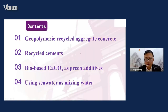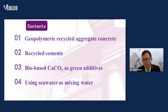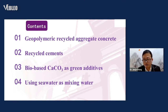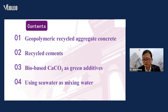My report consists of four parts. As we know, concrete consists of aggregates, cement, and water. The first part is geopolymer recycled aggregate concrete, meaning the aggregate is recycled and we use geopolymer to replace the ordinary cement.